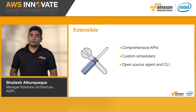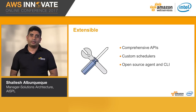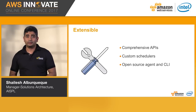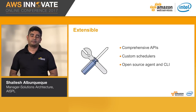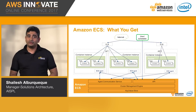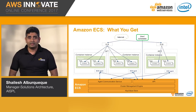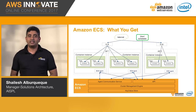ECS has a simple set of APIs that makes it very easy to integrate and extend. The ECS CLI can be used to integrate into a custom scheduler or CI/CD pipeline. The CLI supports Docker Compose, which means you can use Docker Compose to define tasks on ECS. In a sense, you are getting everything as an API, which lets you focus your time on developing applications and services rather than doing the undifferentiated heavy lifting of operating and maintaining a container management system.